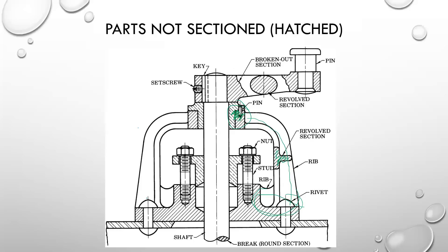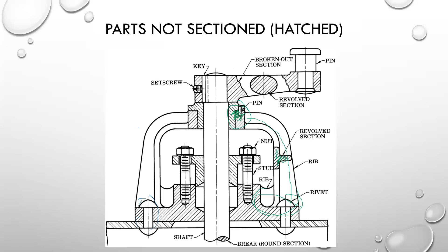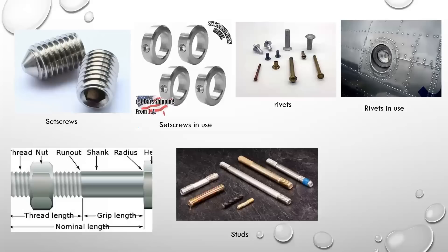When rivets appear, you cut along the axis of rivets — you do not provide hatch lines. Then we also have studs. Studs are more like a bolt but without heads. In the next slide I am going to show all these parts I've named here in pictorial views.